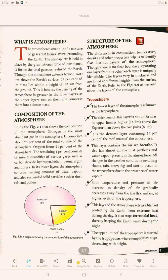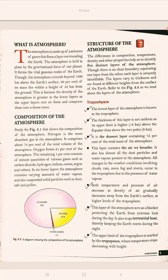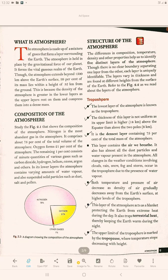This layer of the atmosphere acts as a blanket, protecting the Earth from extreme heat during the day. It also traps terrestrial heat, thereby keeping the Earth warm during the night. The upper boundary of the troposphere is called the tropopause, where temperature stops decreasing with height.